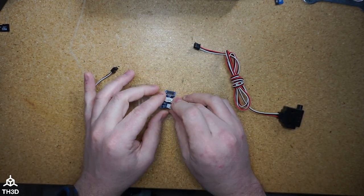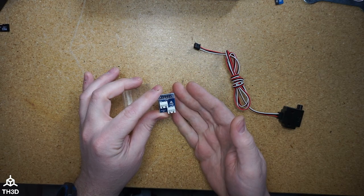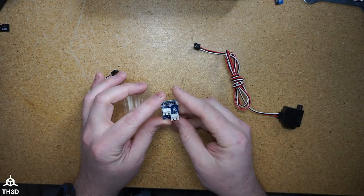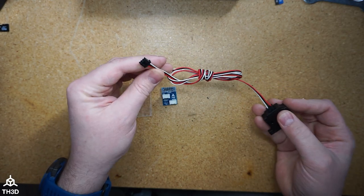Now what this little adapter board does is it rewires the sensor to work with certain printer boards like the Creality boards, SKRs, etc. Because these sensors use a different pinout than the plug on the board.